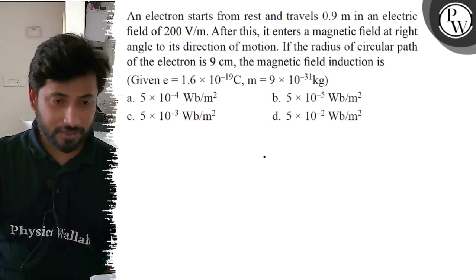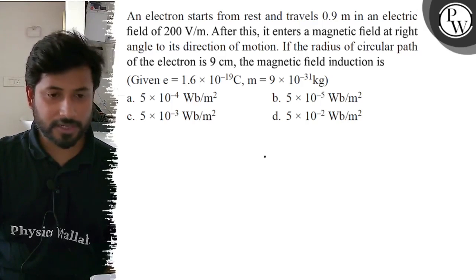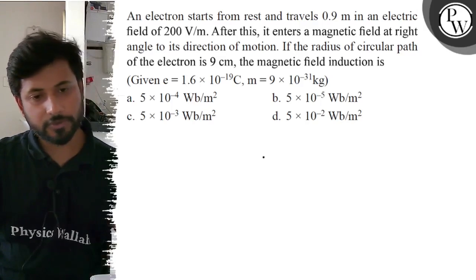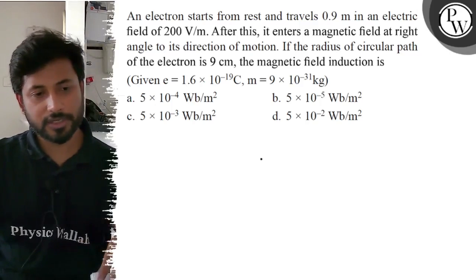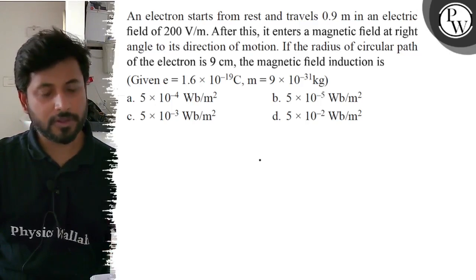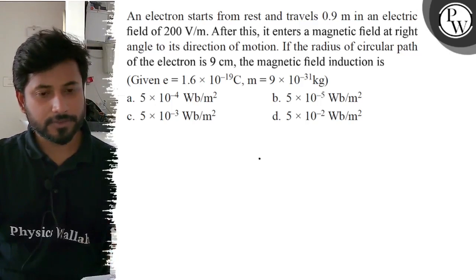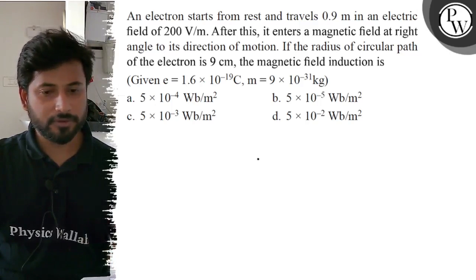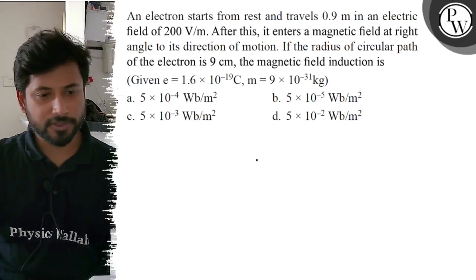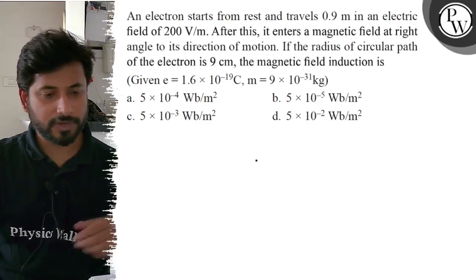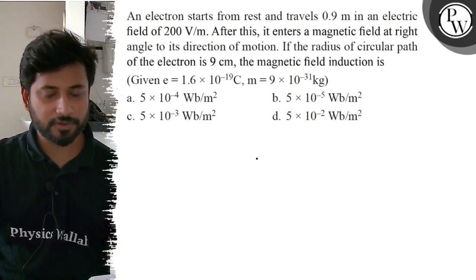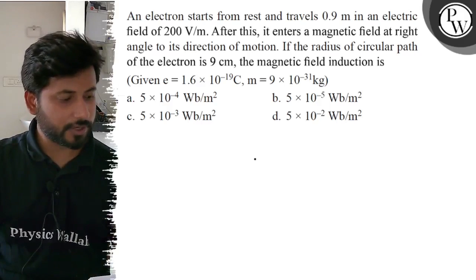Given: e equals 1.6 into 10 to the power minus 19 C, m equals 9 into 10 to the power minus 31 kg. Option A: 5 into 10 to the power minus 4 Weber per meter square. Option B: 5 into 10 to the power minus 5 Weber per meter square. Option C: 5 into 10 to the power minus 3 Weber per meter square. Option D: 5 into 10 to the power minus 2 Weber per meter square.